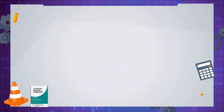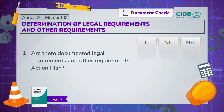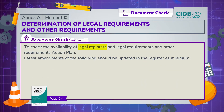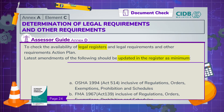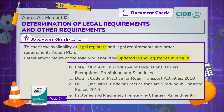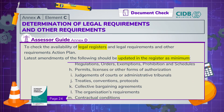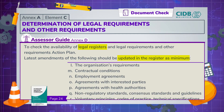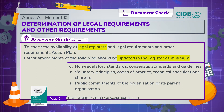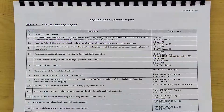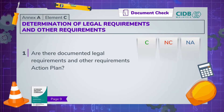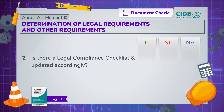In element C, we need to inspect and make sure all legal requirements and other requirements action plan are documented. We do this by verifying the legal register and ensuring that it contains the minimum list of law and regulations stated in Annex D. Tick non-compliance if there's no such action plan, or if the action plan does not meet the minimum list. Check and make sure an updated legal compliance checklist is in order.